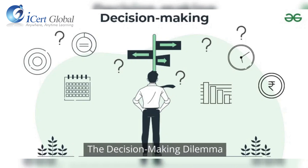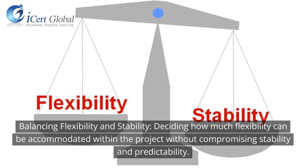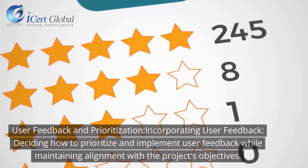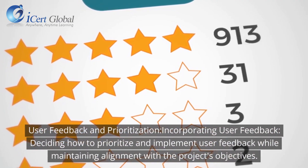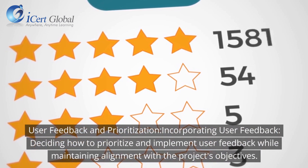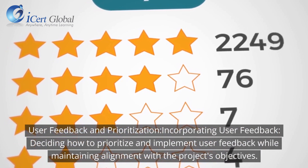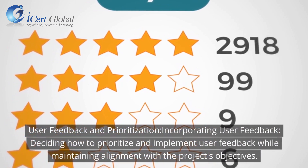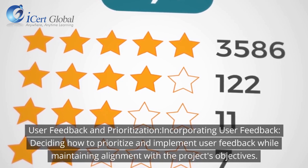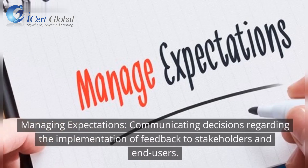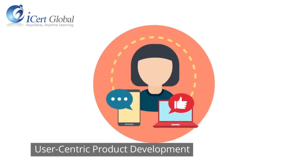The Decision-Making Dilemma: Balancing Flexibility and Stability — deciding how much flexibility can be accommodated within the project without compromising stability and predictability. User Feedback and Prioritization — incorporating user feedback, deciding how to prioritize and implement user feedback while maintaining alignment with the project's objectives. Managing Expectations — communicating decisions regarding the implementation of feedback to stakeholders and end users.